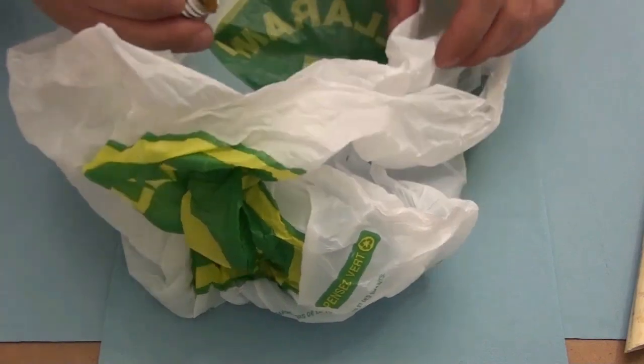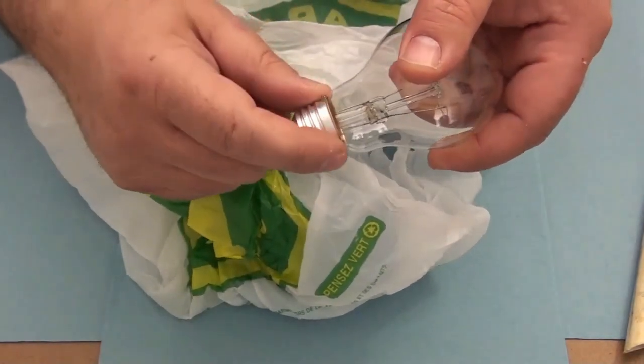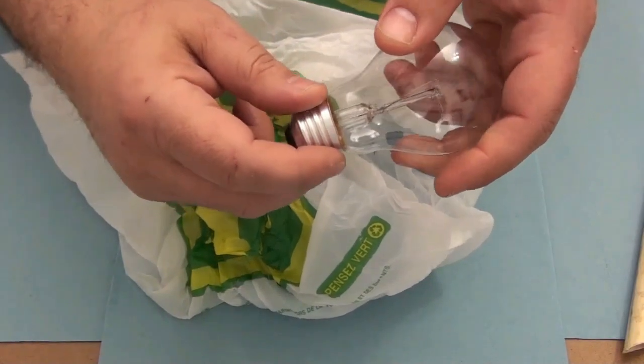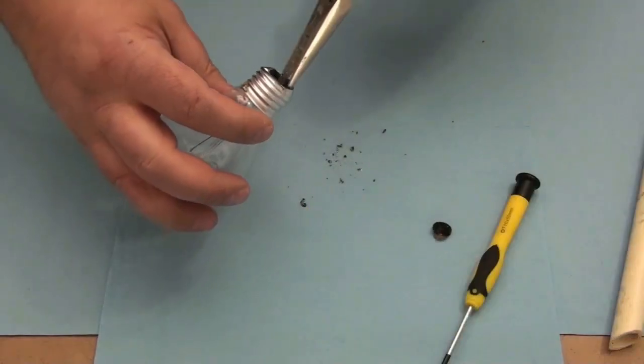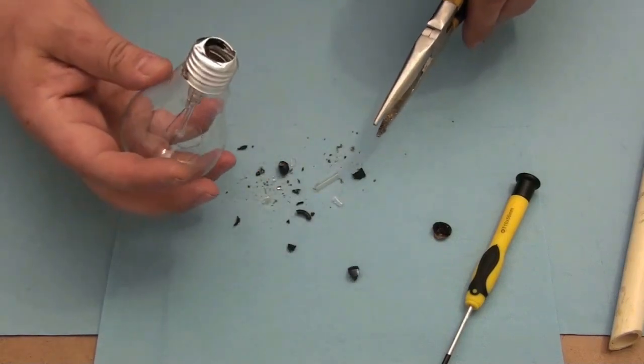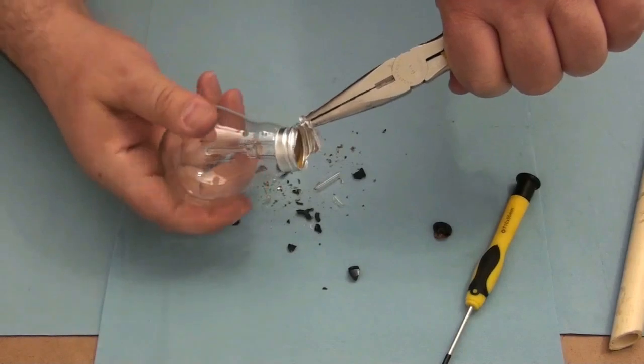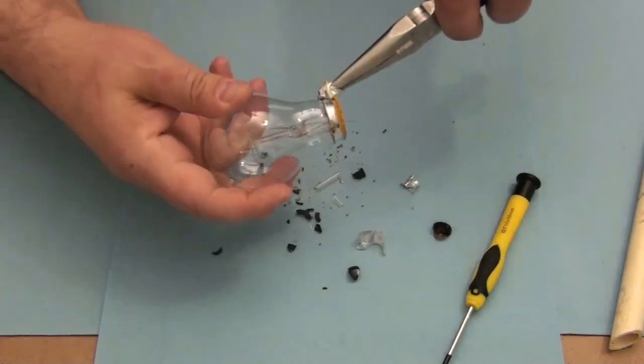What I'm gonna do is I'm gonna use my pliers over here and I'm gonna remove the metal to save the glass over here. That's exactly what I need. Try to peel it like a tuna can.